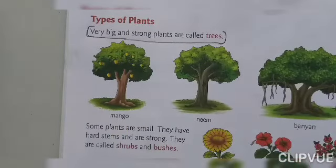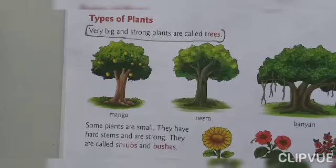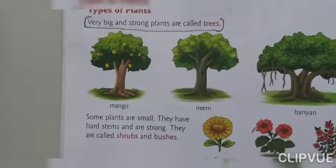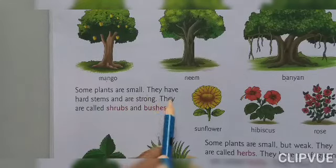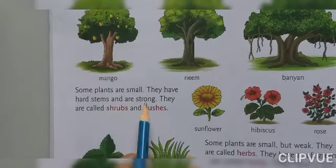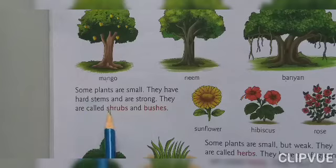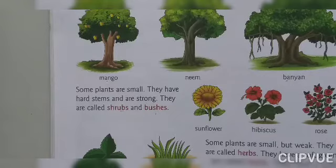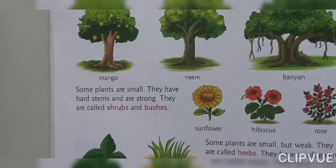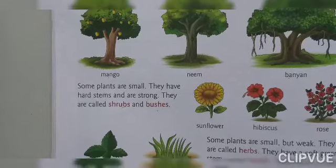Some plants are small. They have hard stems and are strong. They are called shrubs and bushes. You have observed them in the first video — shrubs and bushes are found around our area too. The rose plant — you all have observed it — that is a shrub.